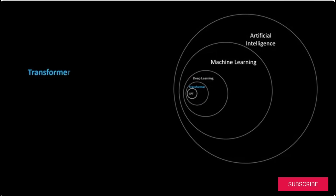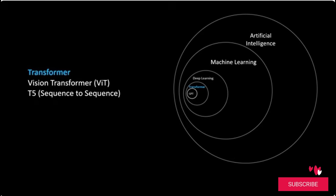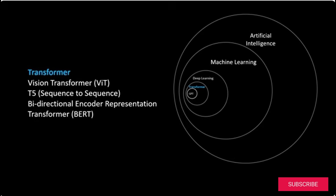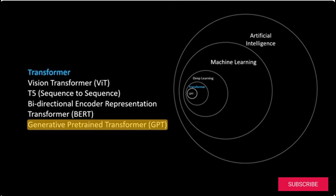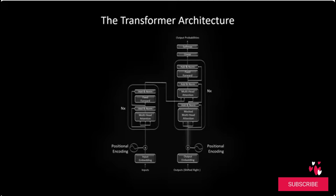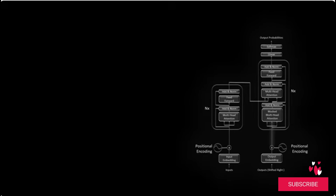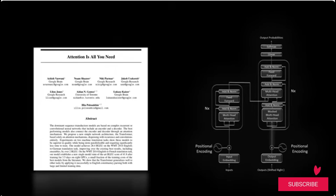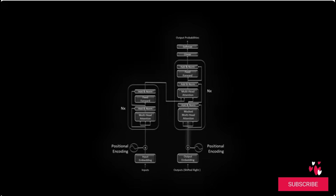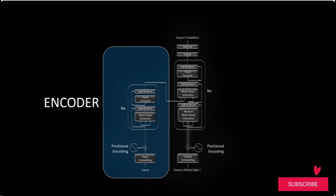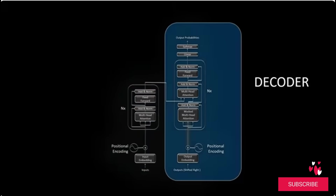The transformer architecture has been used in various forms: Vision Transformer for image-based tasks, T5 for sequence-to-sequence tasks, BERT for NLP tasks, and GPT-like architecture for text generation tasks. The transformer architecture was first introduced in the groundbreaking research paper 'Attention Is All You Need.' It consists of two main components: the encoder and the decoder, which together form the transformer architecture.